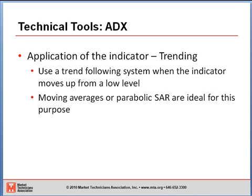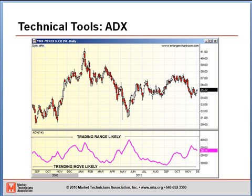To use the indicator in a trending methodology: when you see the indicator at a low level and in a base, use a trend following system — start taking signals when moving averages cross, or use your parabolic stop and reverse system. Use that to determine your trend direction, especially if you've been in a range for a while. On the chart, I've marked the ADX when it's below the 10 area as a trending move being likely. The first big trending move, from March to May, was indicated by the low ADX figure in the 10 area, and when the ADX moved up close to 40, the market started to trade sideways.